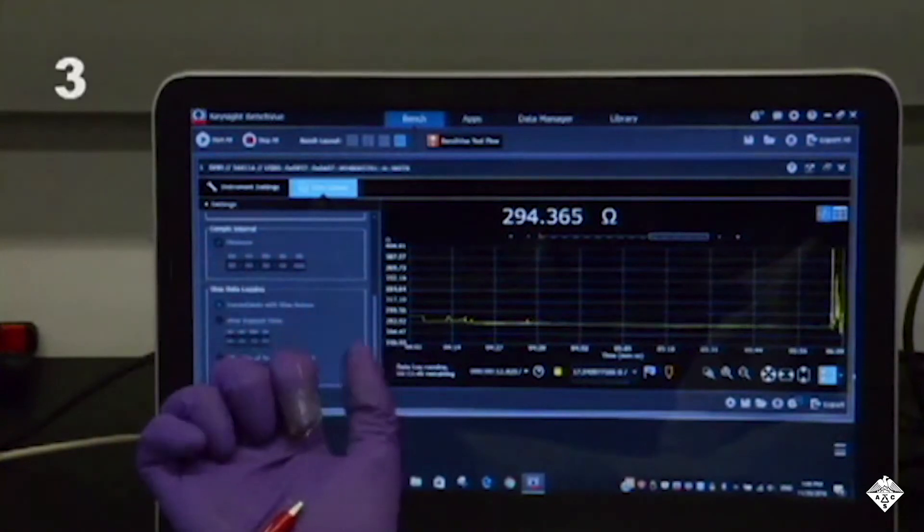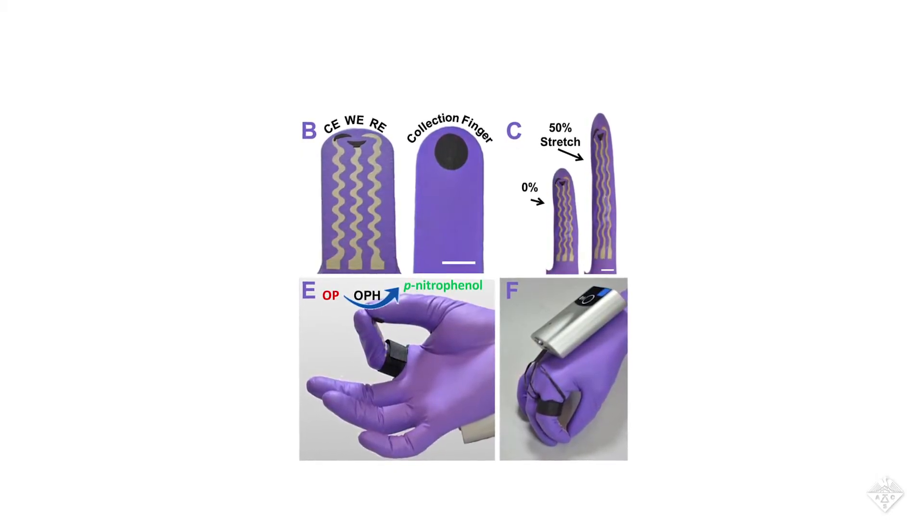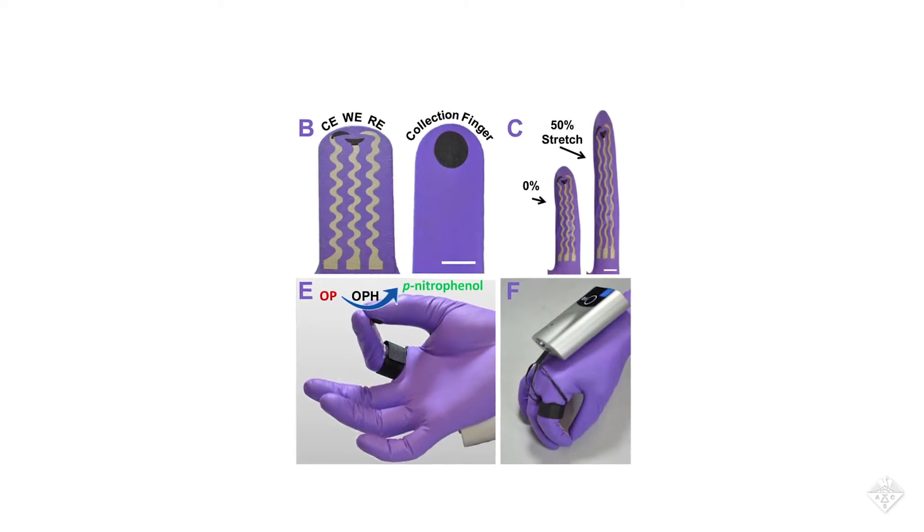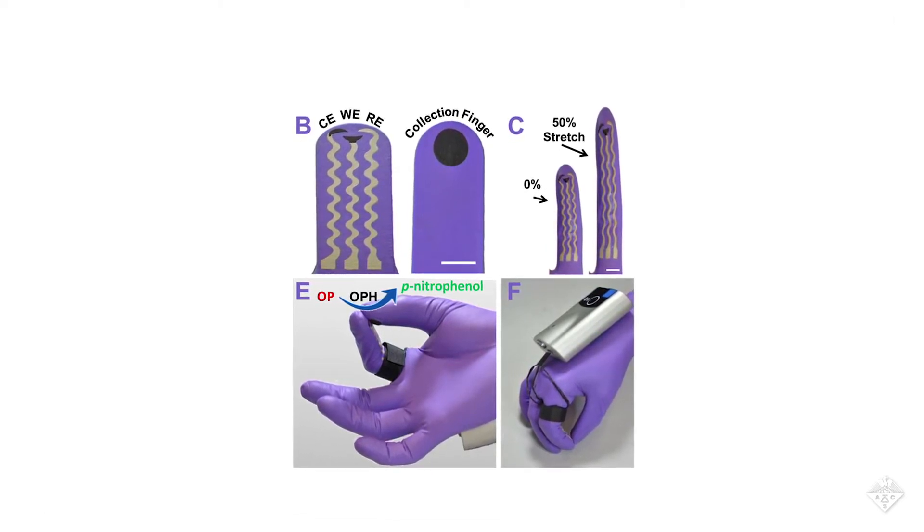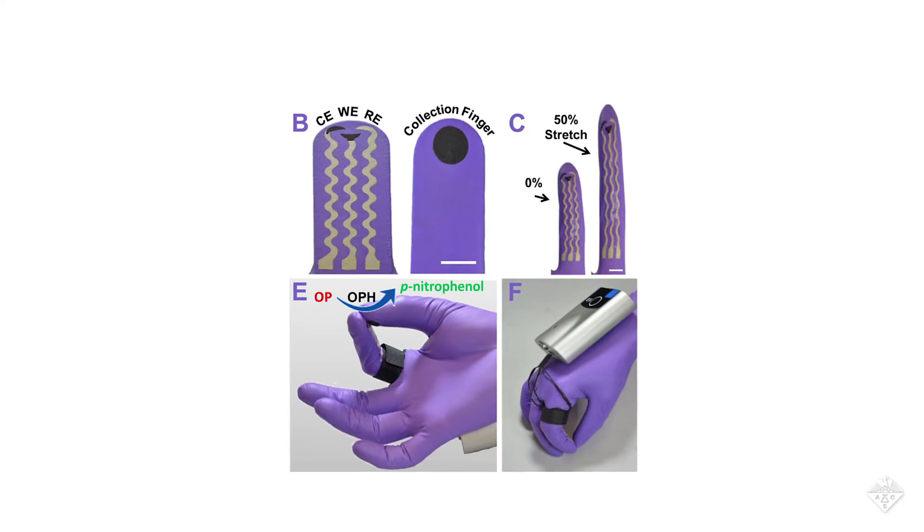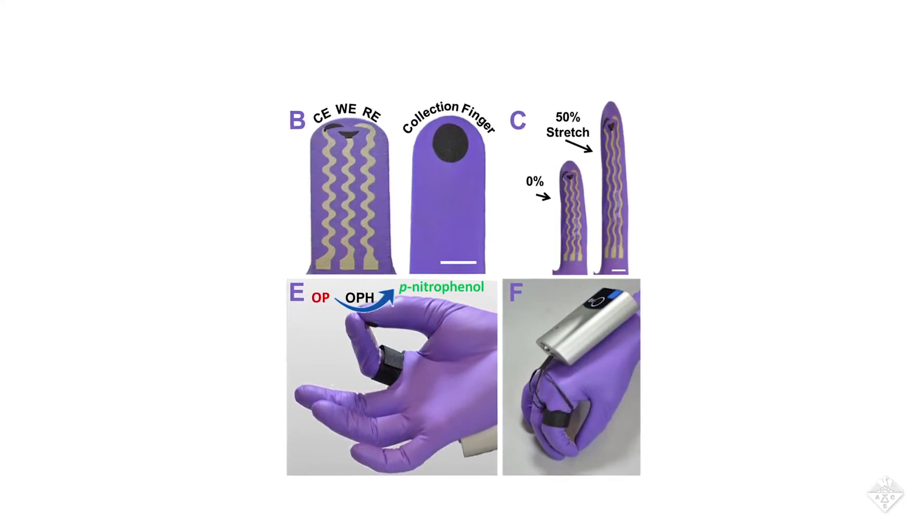With the stretchiness down, the researchers put the sample collector on the glove's thumb and the enzyme-based biosensor on the index finger. To test for organophosphates, a user would swipe the thumb on a surface and then touch the thumb to the index finger.